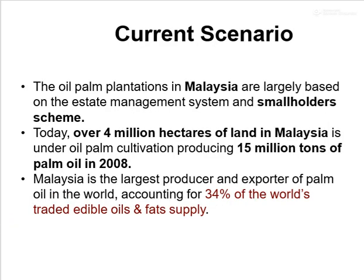In the current scenario, oil palm plantations in Malaysia are largely based on the estate management system and smallholder scheme. Today over 4 million hectares of land in Malaysia is under oil palm cultivation, producing 15 million tons of palm oil in 2008. Malaysia is the largest producer and exporter of oil palm in the world, accounting for 34% of the world's trade in edible oil and fat supply.